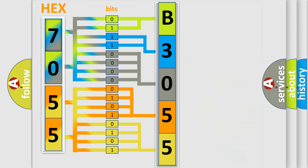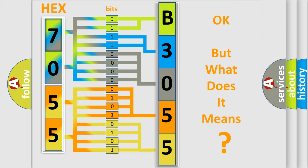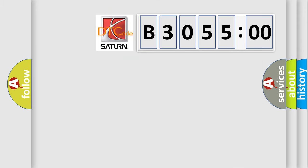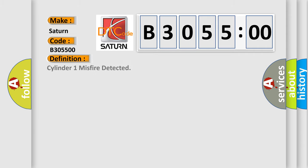We now know in what way the diagnostic tool translates the received information into a more comprehensible format. The number itself does not make sense to us if we cannot assign information about what it actually expresses. So, what does the diagnostic trouble code B300 and 5500 interpret specifically for Saturn car manufacturers? The basic definition is: